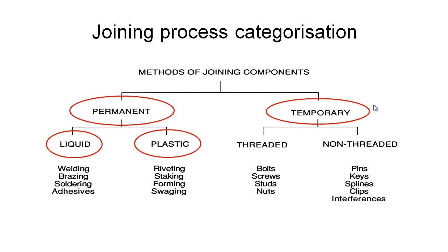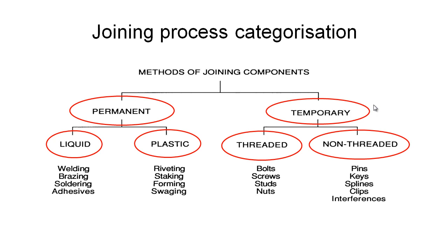On the temporary side of the tree, we've split them into threaded and non-threaded fasteners. Under threaded fasteners we have common things like bolts, screws, studs, and nuts, and in the non-threaded category we have options such as pins, keys, splines, clips, and interference fits. This is the way we've chosen to categorize the different methods and we're going to work through them in this order.